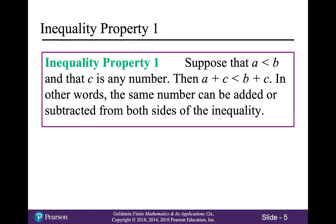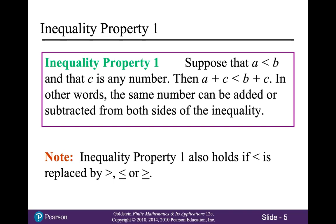Inequality property one, also known as the addition property of inequality, says: suppose that A is less than B and C is any number. Then A plus C is less than B plus C. In other words, the same number can be added or subtracted from both sides of the inequality. We use this property to solve inequalities. Note that this property also holds if less than is replaced with any other inequality symbol.